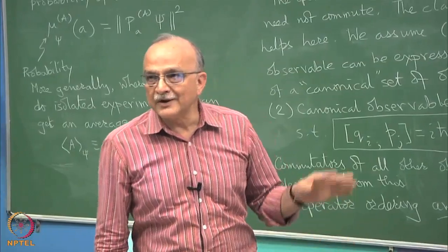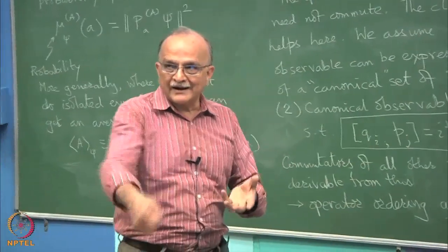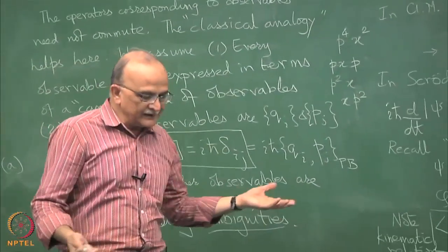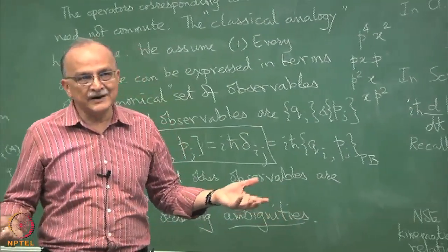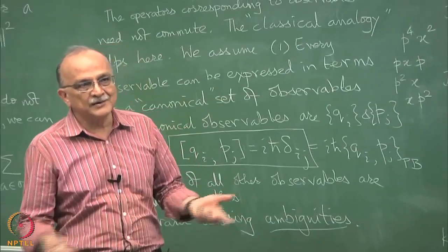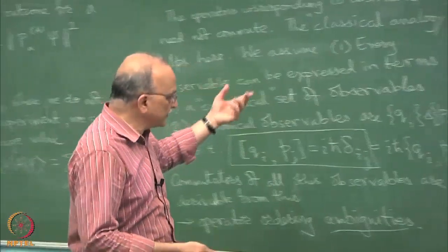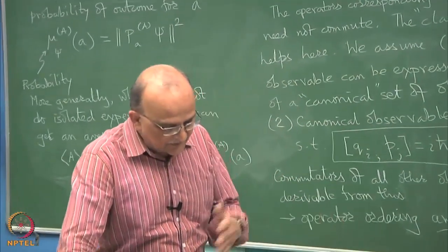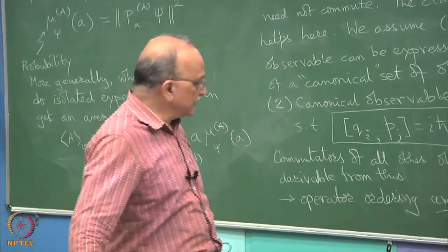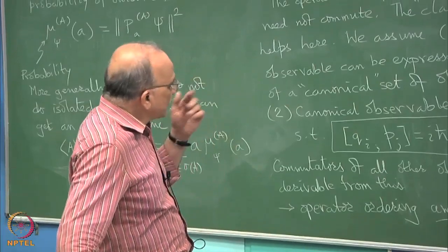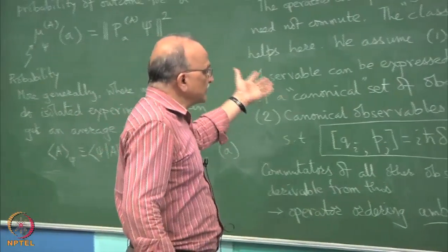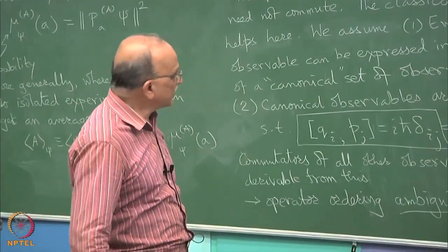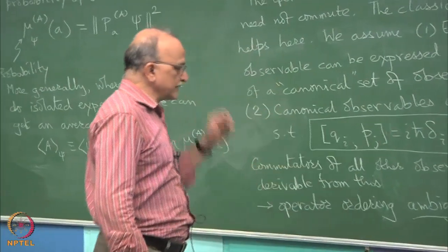So when you get to spin, you have to add it by hand from your pocket. Amusingly enough it has commutation relations which look exactly like the angular momentum commutation relations which angular momentum can be made out of q and p and in fact mix as well.